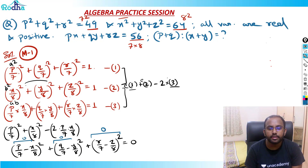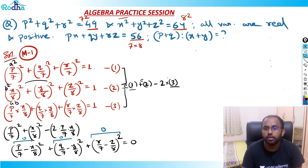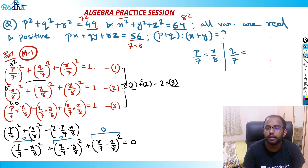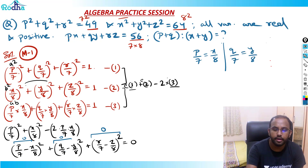So P/7 − X/8 = 0 means P/7 = X/8. Similarly, Q/7 − Y/8 = 0 means Q/7 = Y/8.